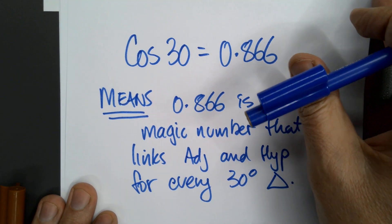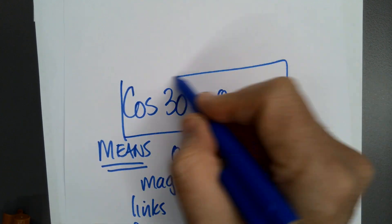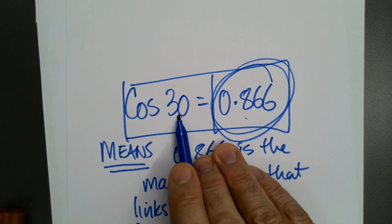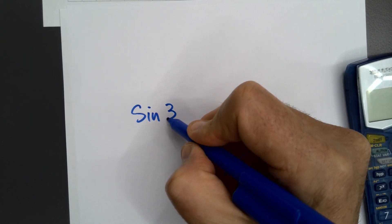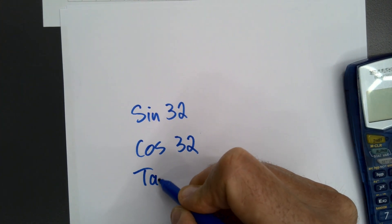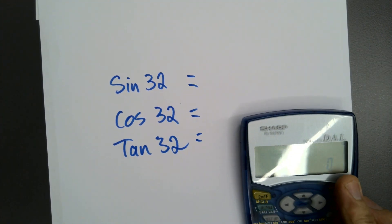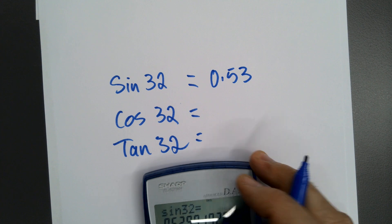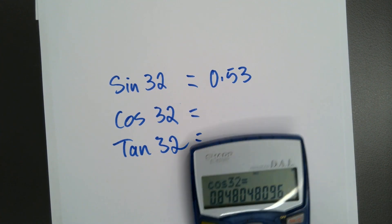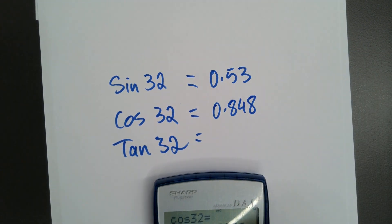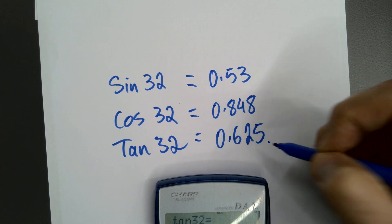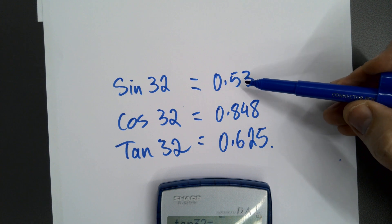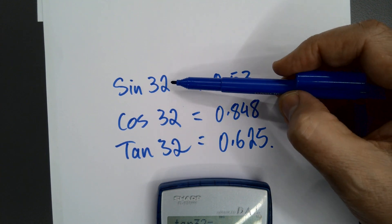Well, what happens if you don't have 30 degrees? That's the thing. That is the magic number that links it when the angle is 30 degrees. As soon as you change the angle, you get a whole different set of magic numbers. So for instance, sine 32, cos 32, tan 32... cos 32 is 0.848, sine 32 is 0.625, and tan 32 is 0.625. So they are the special numbers, the magic numbers that link those three sides, the pairs of sides, when the angle is 32.